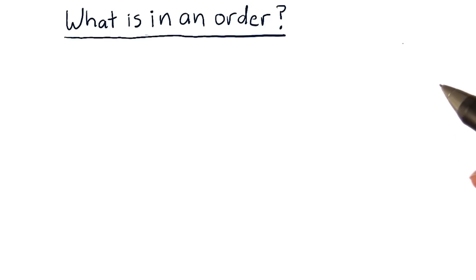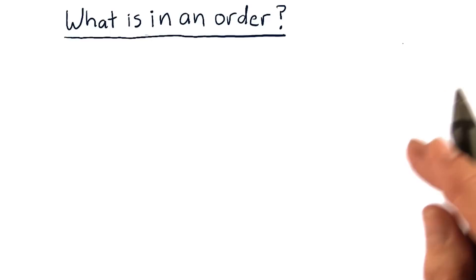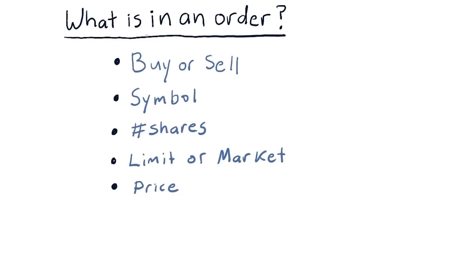The first stop there is to think about what is actually in an order. What are the components of an order that can go to a stock exchange? Here is all the information that must go into a well-formed order.